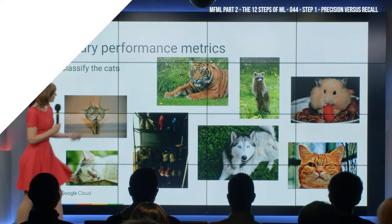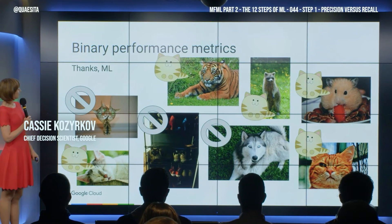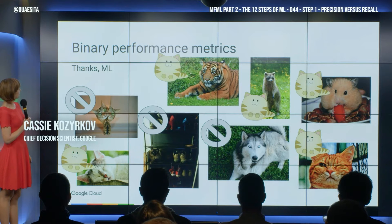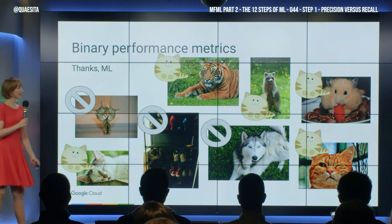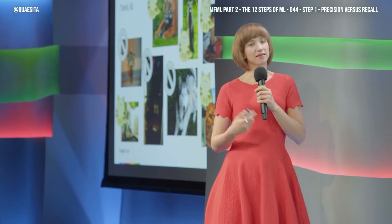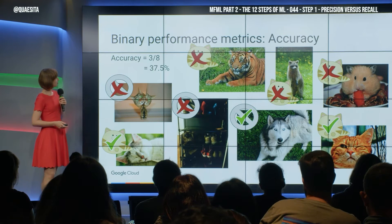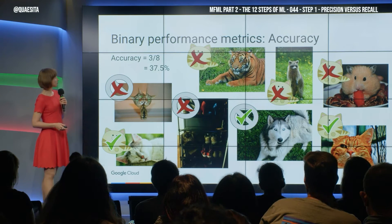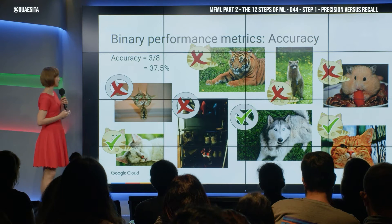We imagine machine learning has a go — oh dear. So this is where it says NotCat, and that's where it says Cat. Let's compute accuracy, which is simply how many did we get right. We got three right out of eight — there's our accuracy.